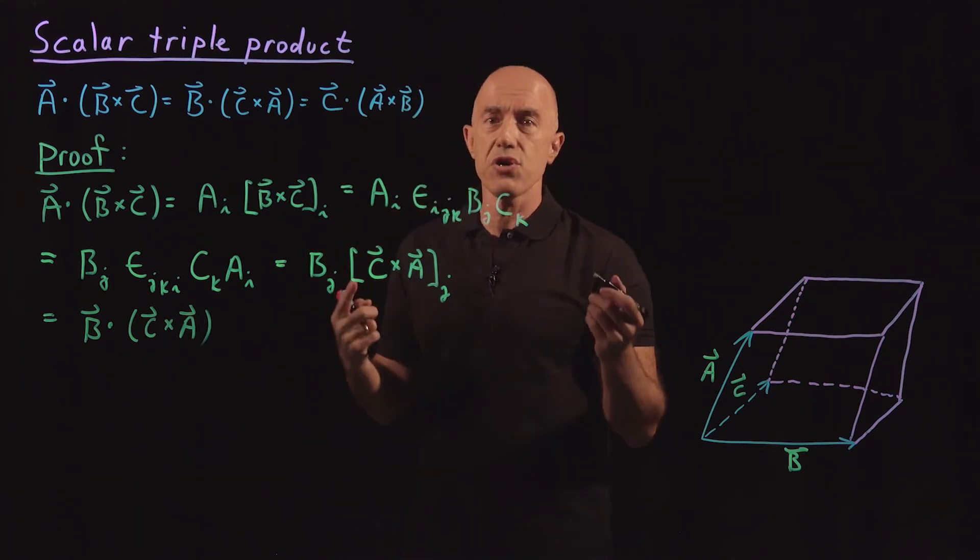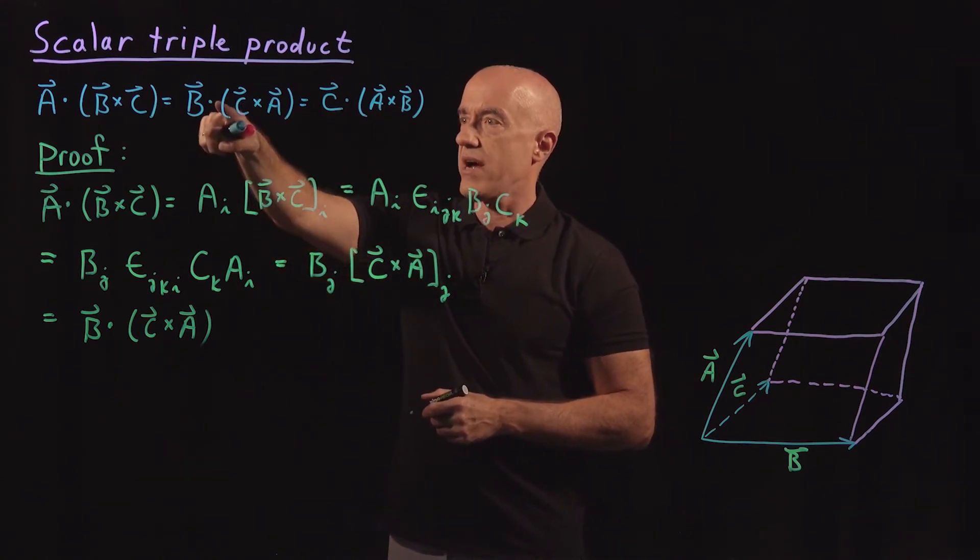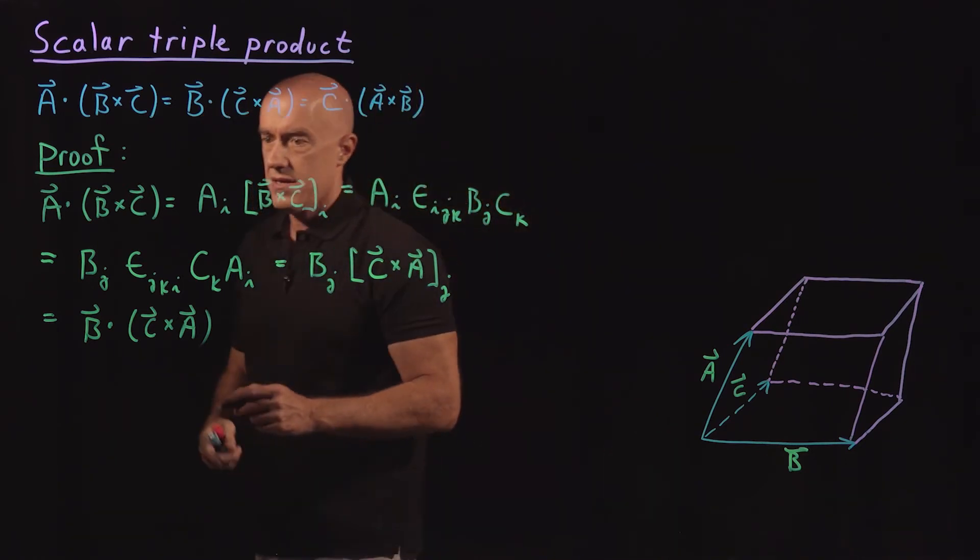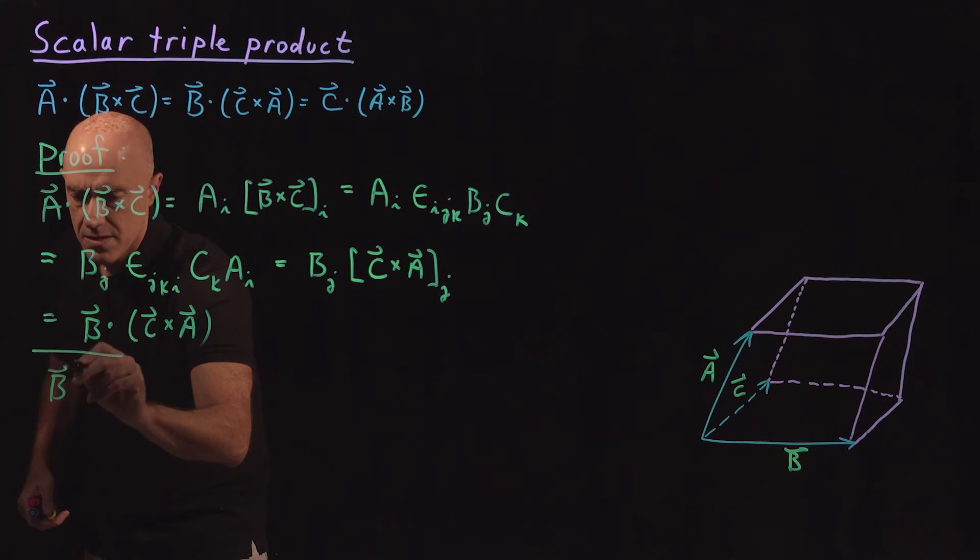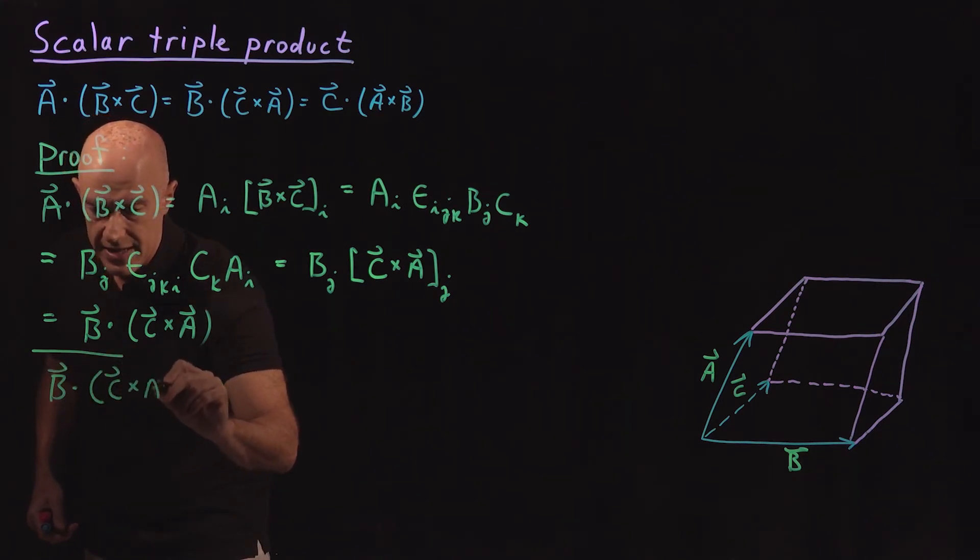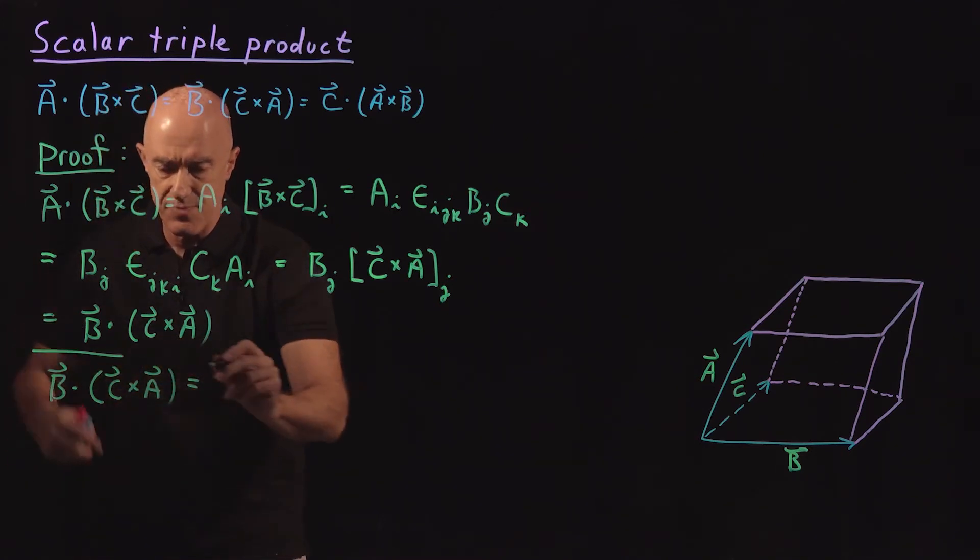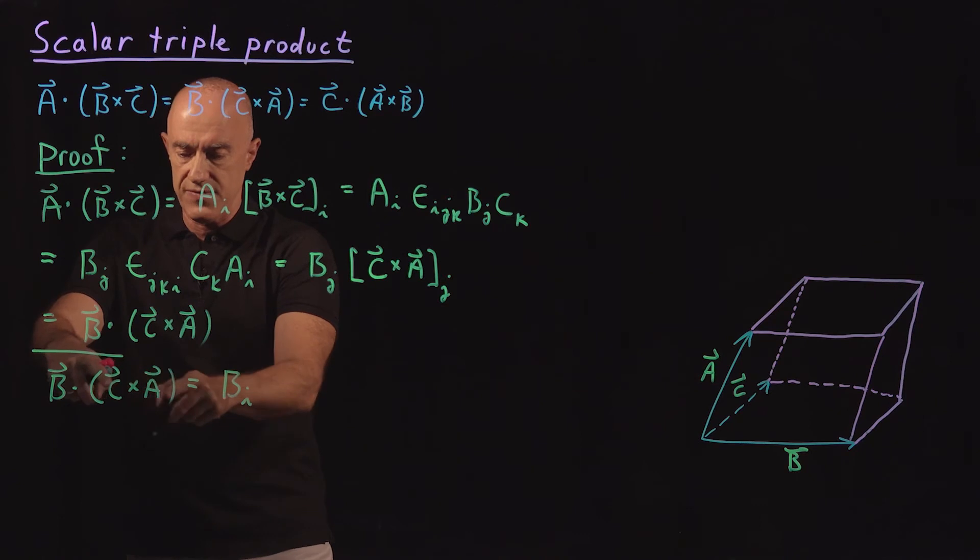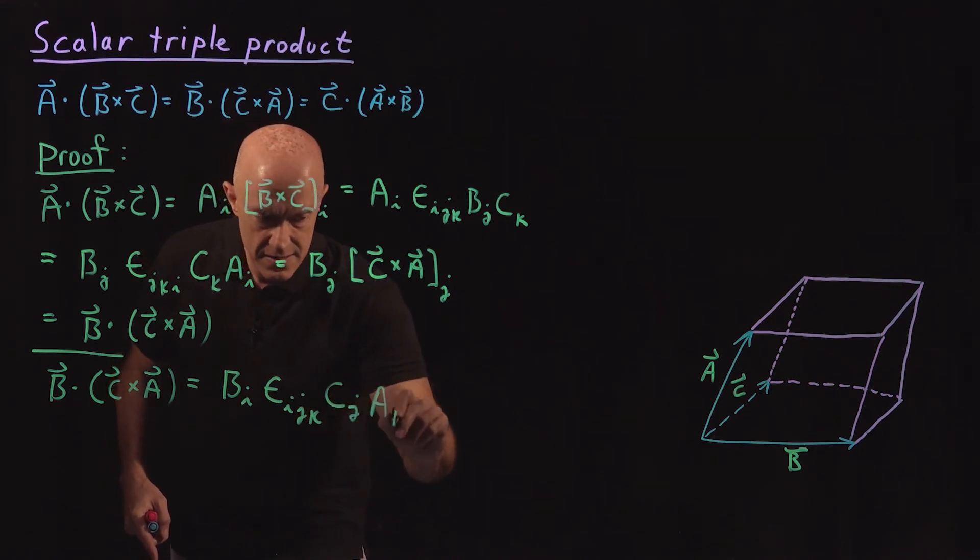I'll show you how I would actually do it in the next identity. So we want to get from B dot C cross A equal to C dot A cross B. What I would do then is I would start with B dot C cross A. And then I would do it all in one step. So the dot product would be B_I. And then against the ith component of C cross A, so I would write Epsilon I and then J, K, C_J, A_K.